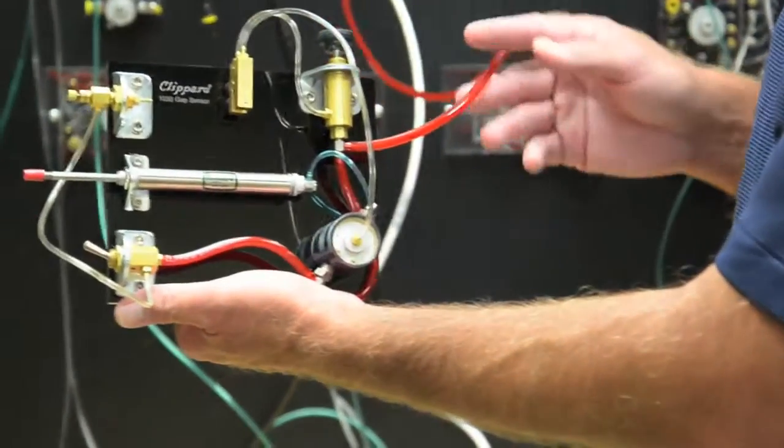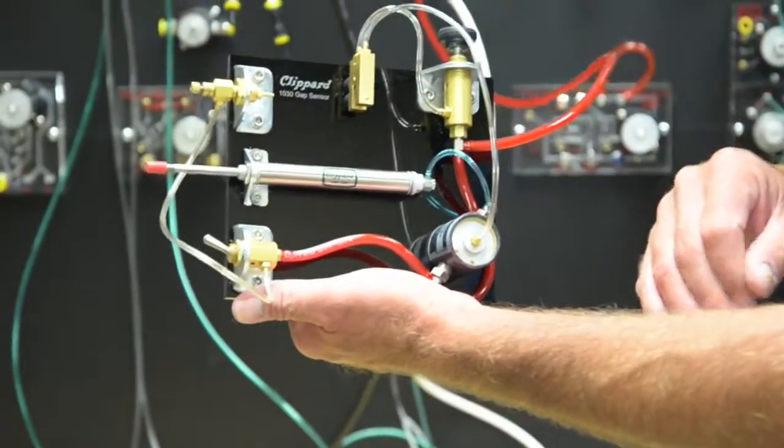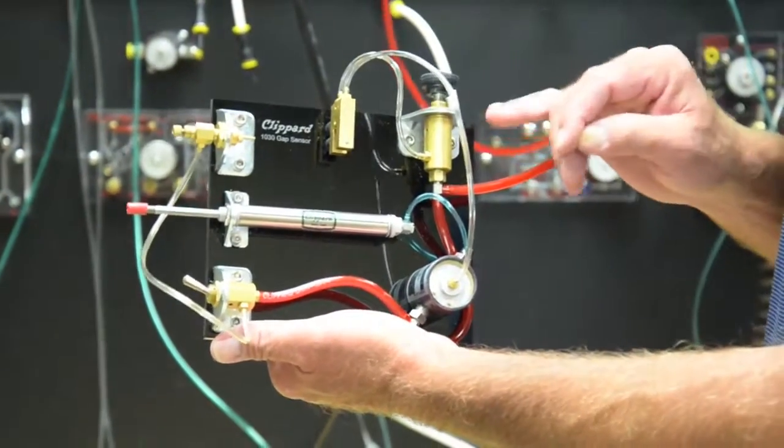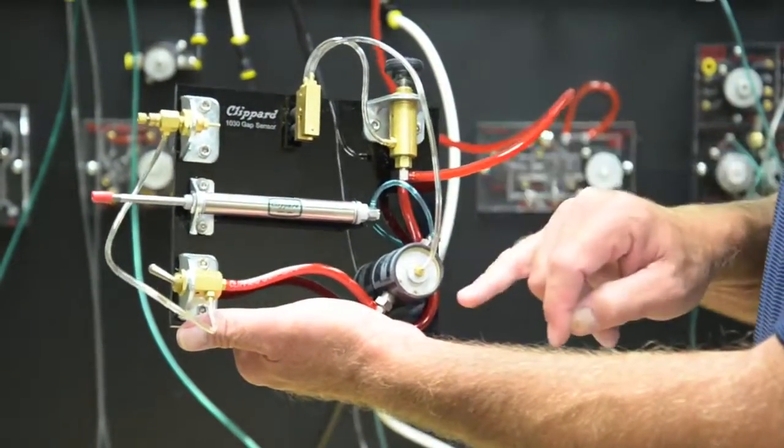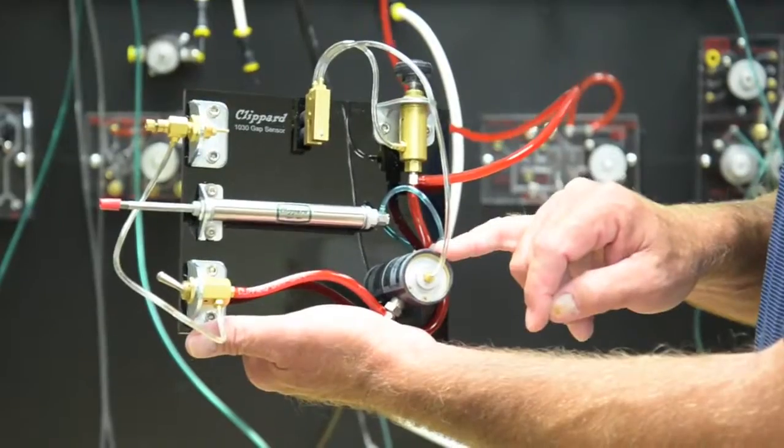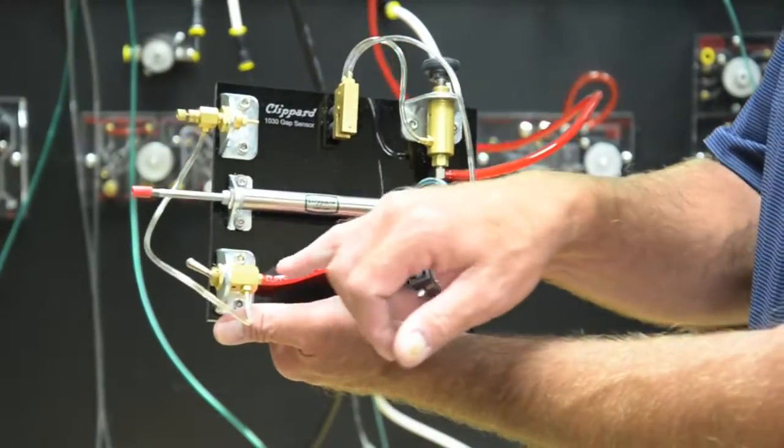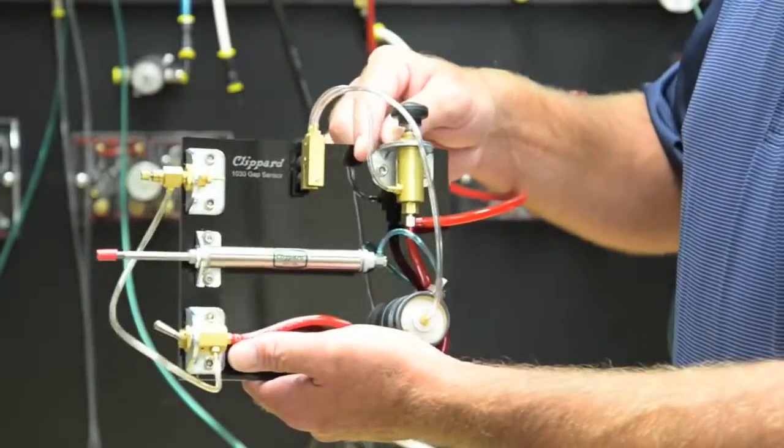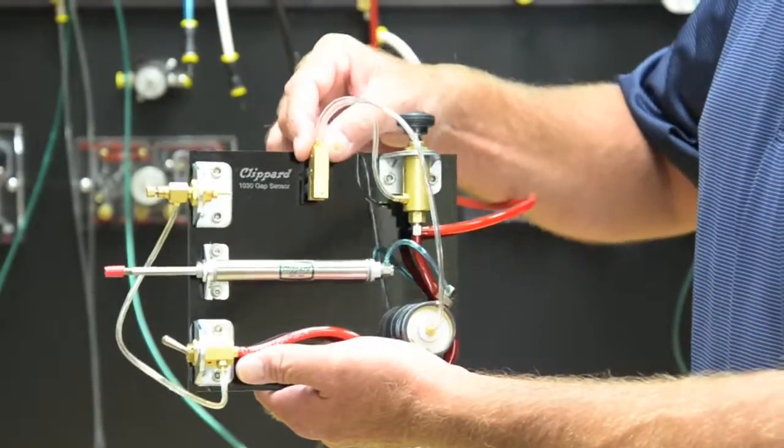Basically what we have is supply pressure coming into our MAR-1-2 0-20 PSI miniature regulator. Supply pressure also comes down to the 20-10 low pressure control valve and also supplying our TV2 toggle valve. We have the regulator set at approximately 5 PSI going to the 1030 gap sensor.